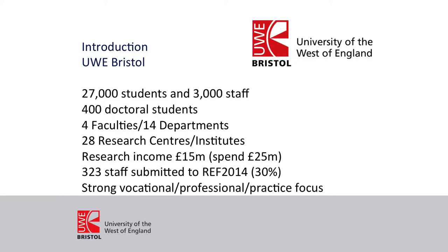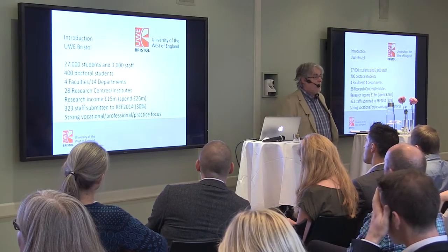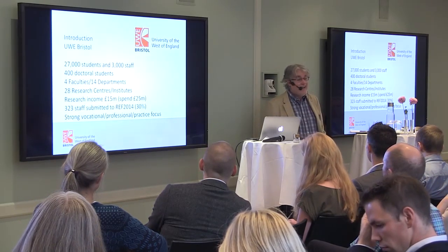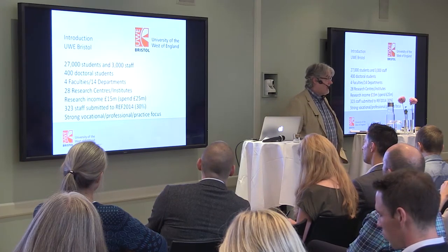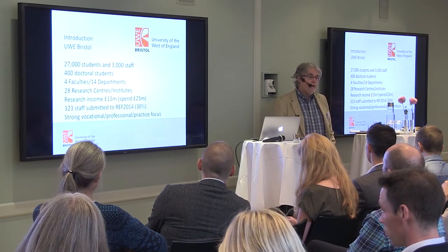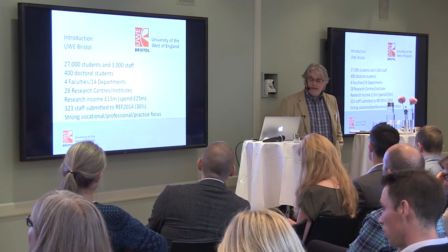We are a large teaching and research university — the largest university in the South West of England in terms of student numbers. We also have a substantial amount of research activity: around 400 doctoral students, around 28 research centres and institutes. We are a strong vocational institution. Prior to being a university, we were what we call a polytechnic in the UK — a technical college. So we have a tradition of technical vocational education and very applied research, which is significant because the impact agenda plays into the idea of applied research as an activity.